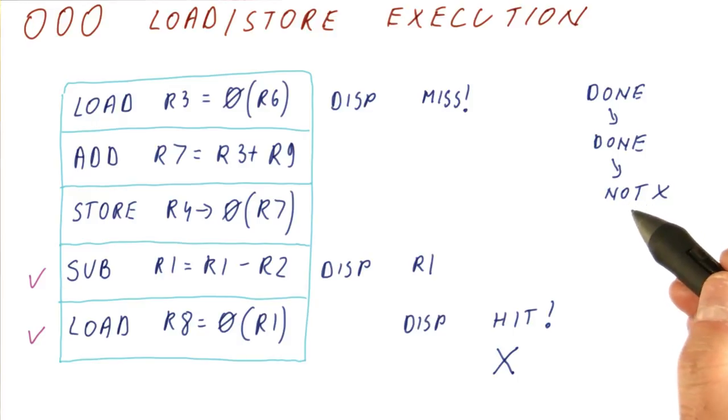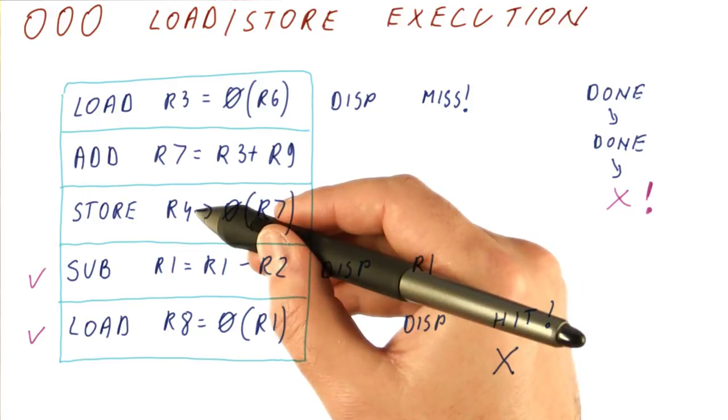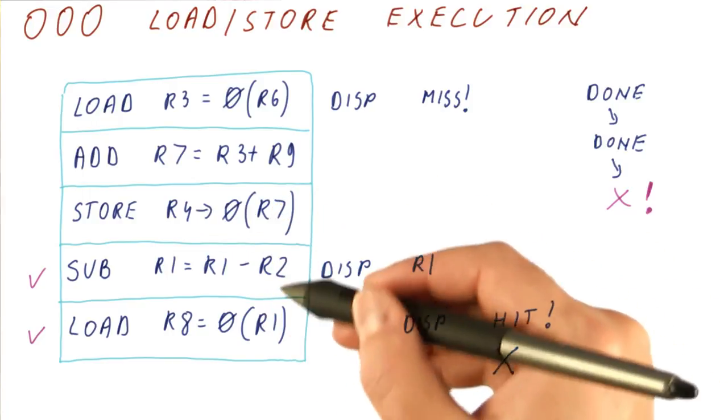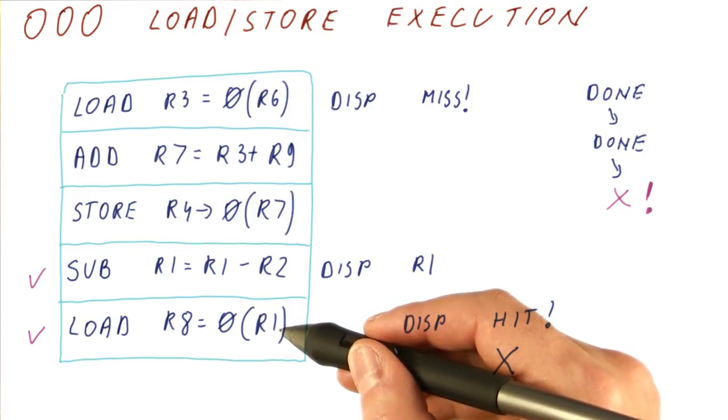However, the problem occurs when the address that the store resolves to is also x. At that point, the value from R4 that the store is storing is really the one that the load should have been loading. However, the load already loaded some stale value from memory.